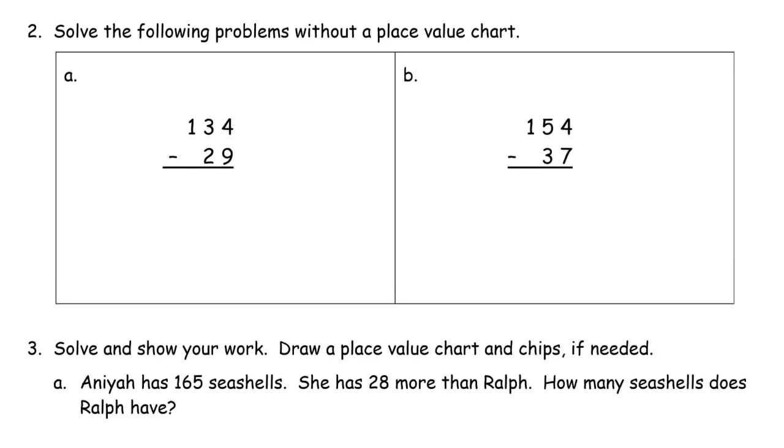And now we're doing these without the place value chart. Here's my minuend. Focusing on that minuend so I don't subtract up. I don't have enough ones to take away nine ones. So I have to unbundle a ten. I'll have two tens left when I do that. But now I'll have fourteen ones. Fourteen minus nine is five.